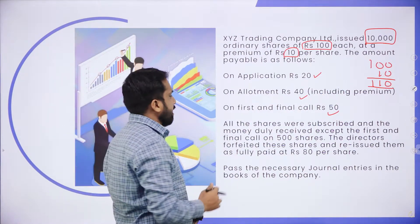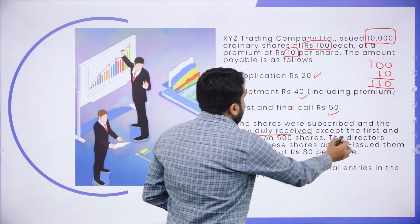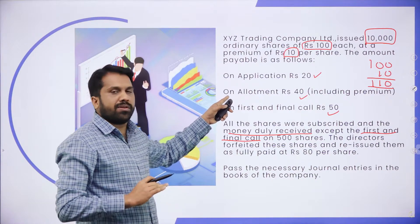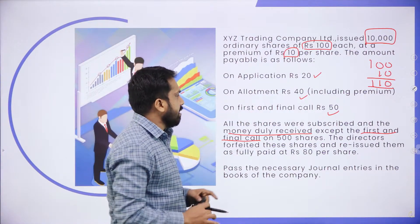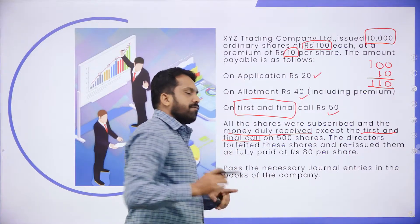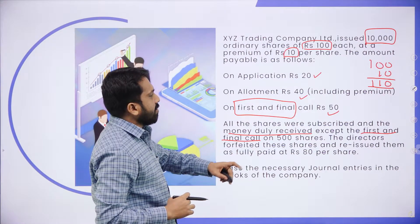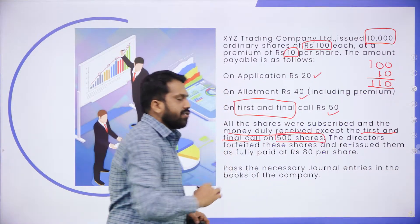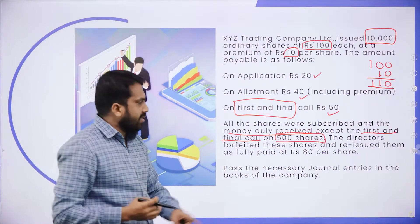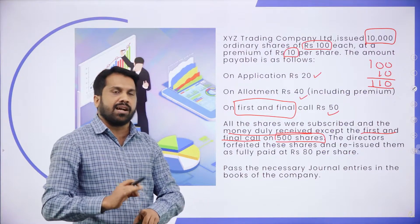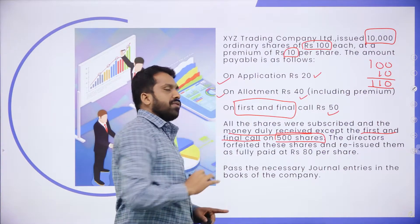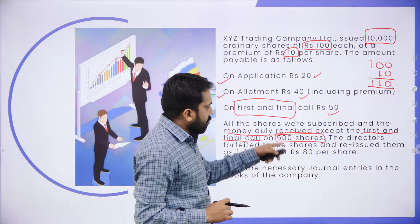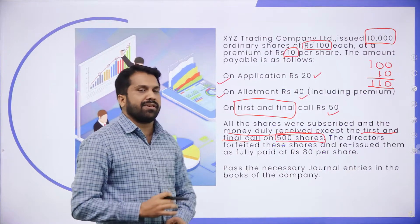All the shares were subscribed and money duly received, except for the first and final call. Application — no problem. Allotment — no problem. But at the time of first and final call, which is ₹50, 500 shares were not paid. This will be discussed while doing the journal entry. First, we'll solve application and allotment.